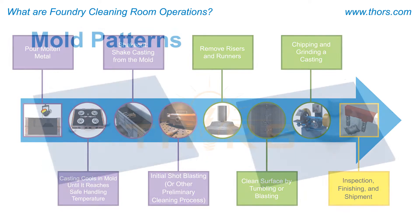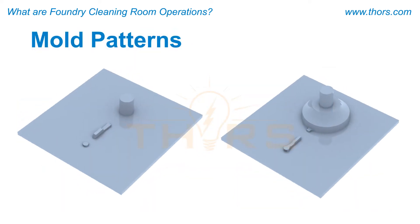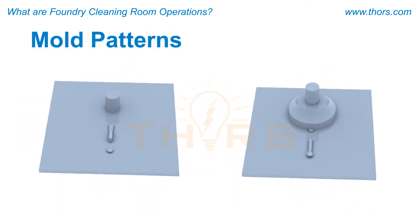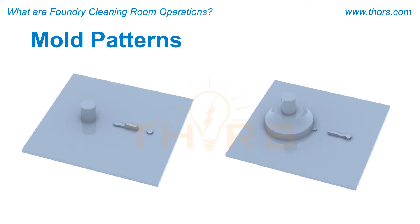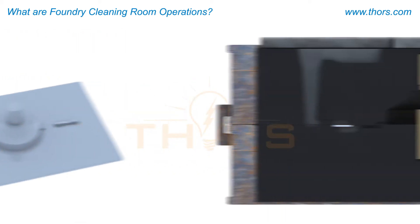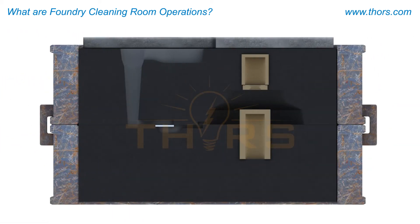Along with melting and sand preparation, production involves using the pattern to create the molds for the casting. Cores are made if the casting requires internal cavities and contours.